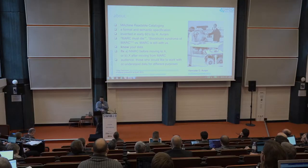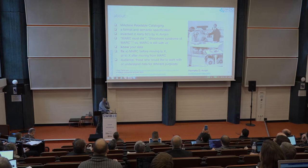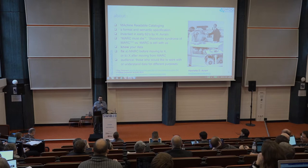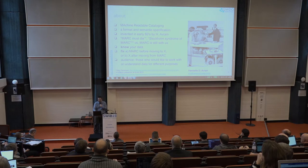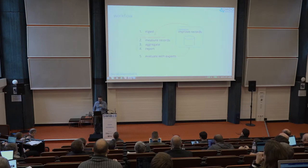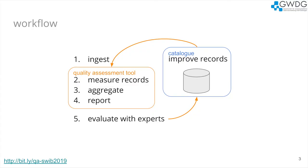MARC was invented by Harriet Avram. There's a MARC manual, and thinking about MARC — which was not named MARC at that time — started in the late 1950s, with implementation starting in the 1960s. I made a tool which measures quality and finds issues with MARC records. It's an independent tool that works with a data dump, and the ideal workflow is that the tool creates reports that catalogers or data experts evaluate and use to improve records in the catalog or data repository.